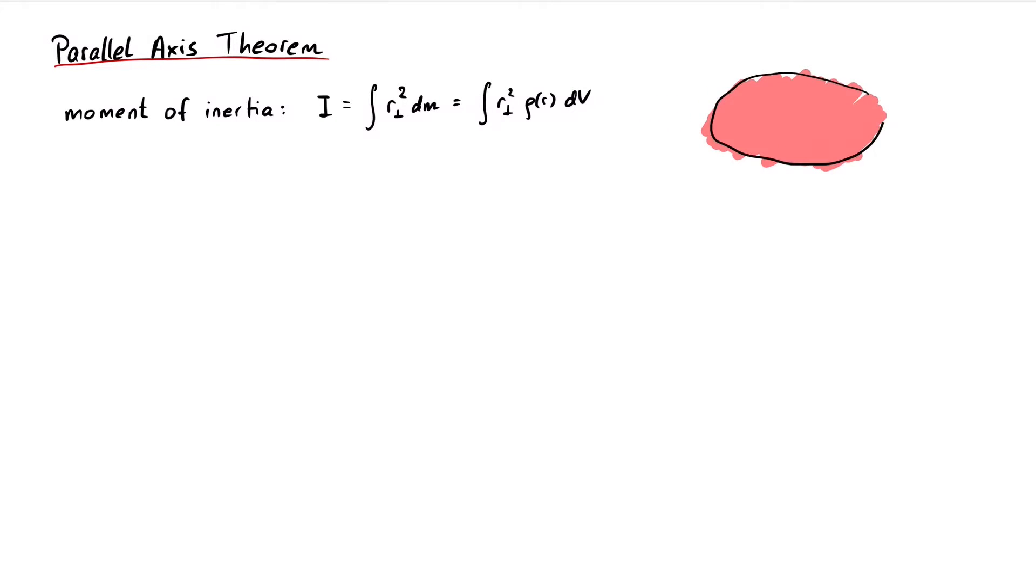r perpendicular is the shortest distance from a volume element dv to the axis of rotation, let's call it a. But what if the object is rotating around a different axis b, which does not go through the center of mass?